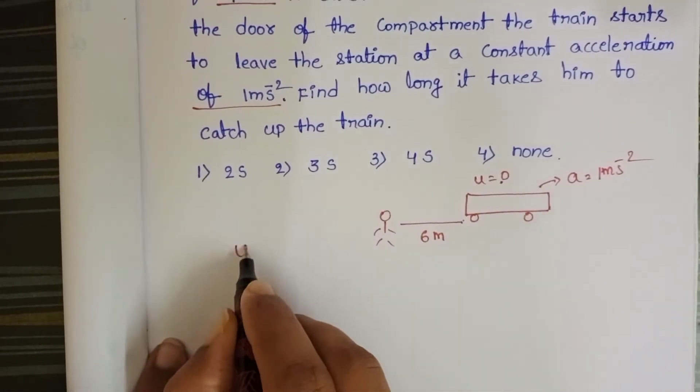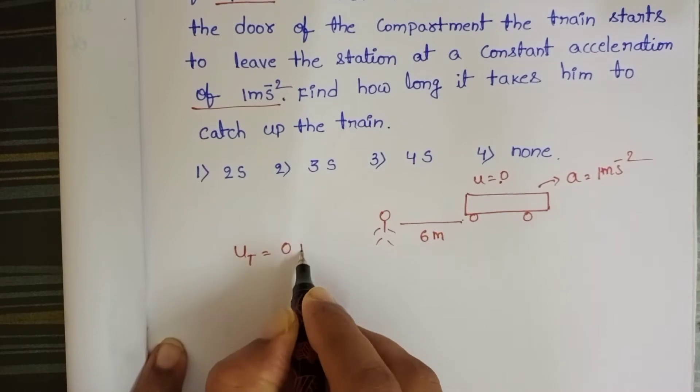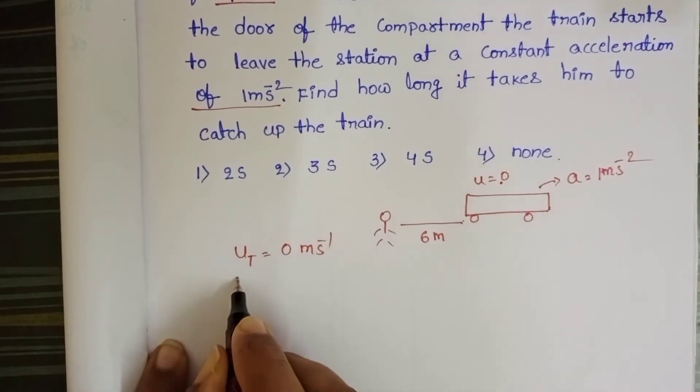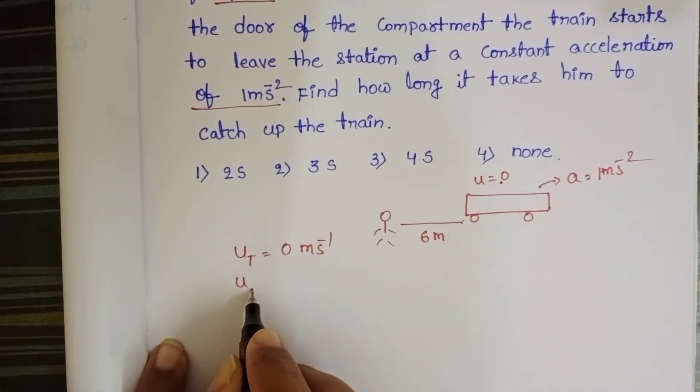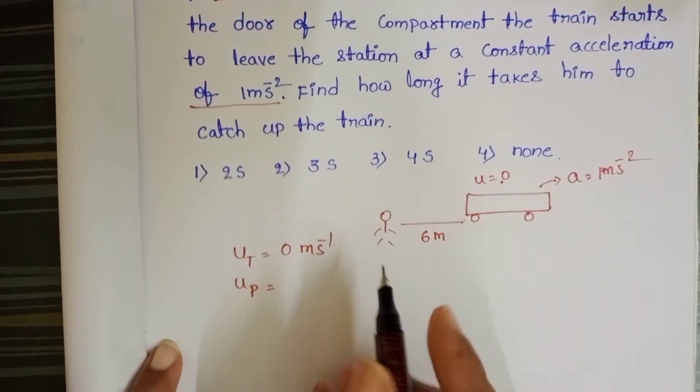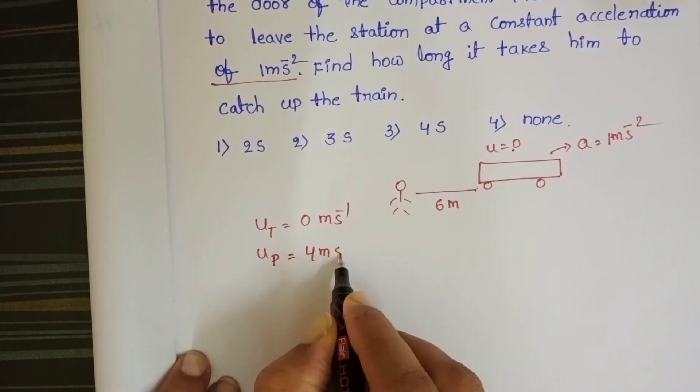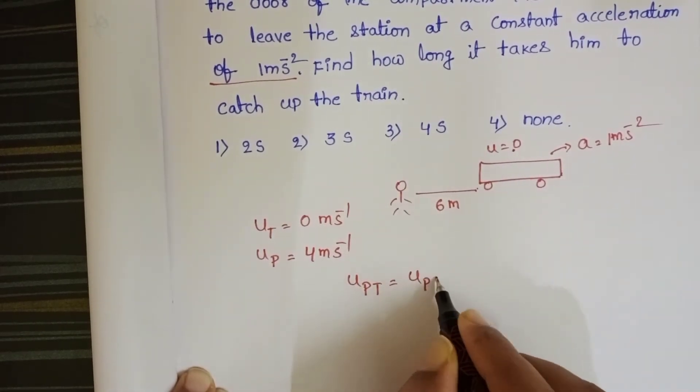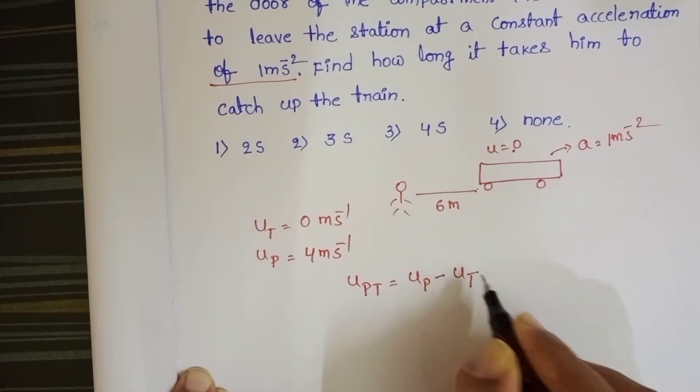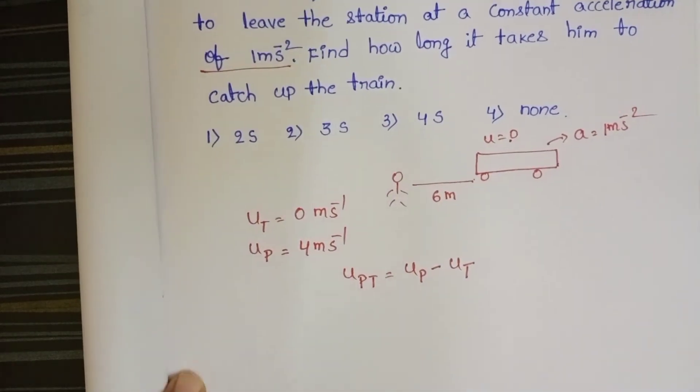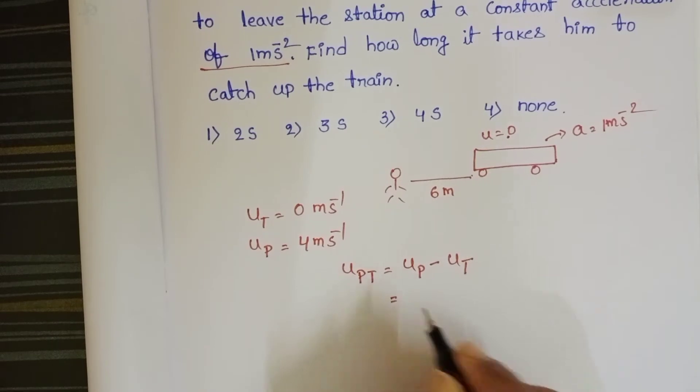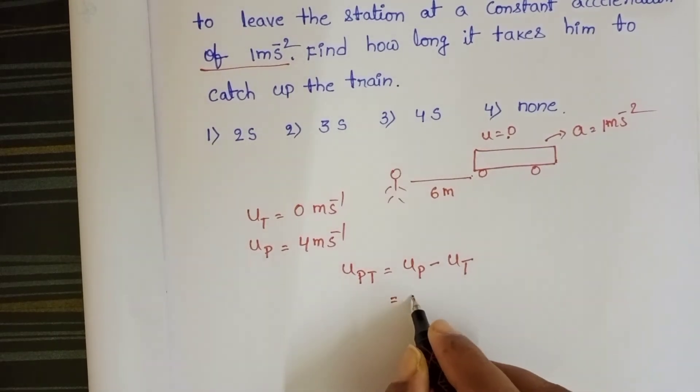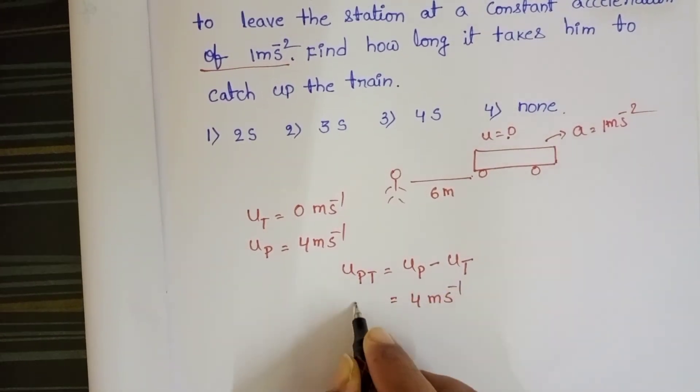Initial velocity of the train is equals to 0 meter per second, and initial velocity of the person is equals to 4 meter per second. Velocity of the person with respect to train is equals to initial velocity of the person minus initial velocity of the train. So relative velocity is equals to 4 meter per second.